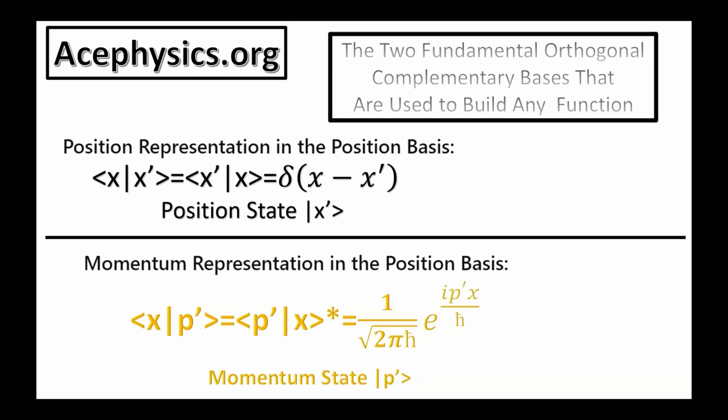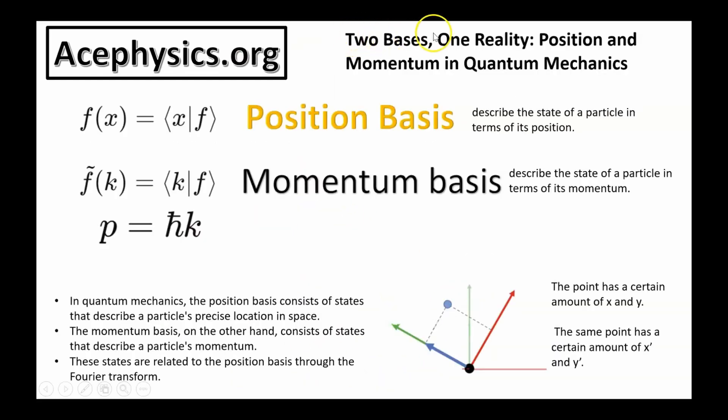Understanding these two basis functions is crucial for studying quantum mechanics. They provide the framework for describing the state of a quantum system in terms of measurable quantities such as position and momentum. The position representation in the position basis is the Dirac delta function, and the momentum representation in the position basis is the complex exponential. Two bases, one reality: position and momentum in quantum mechanics.